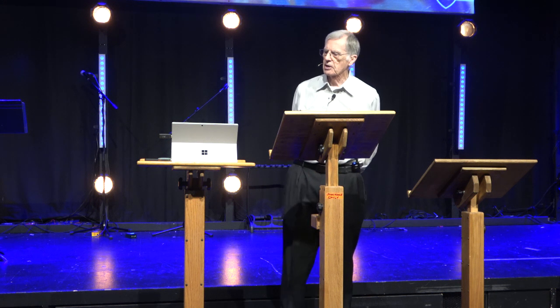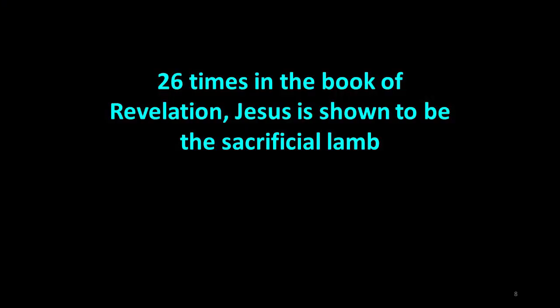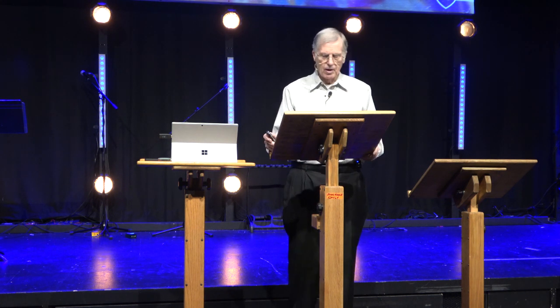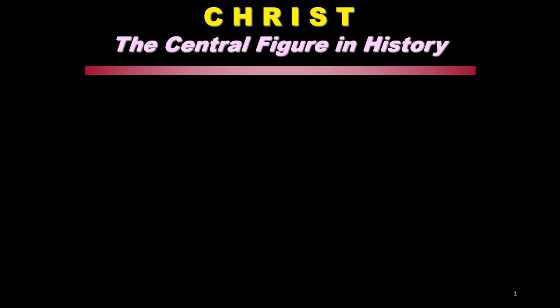Jesus Christ is the grand theme throughout all the Bible and also here in the book of Revelation. So today we're going to focus on what does the book of Revelation say about Jesus Himself. Twenty-six times the book of Revelation shows Him to be the sacrificial lamb — calls Him the Lamb 26 times. The book is really full of Him, just like the rest of the Bible. The Messiah shows up over and over again, because Jesus is the central theme of all the Bible. As one person put it, history is His story.